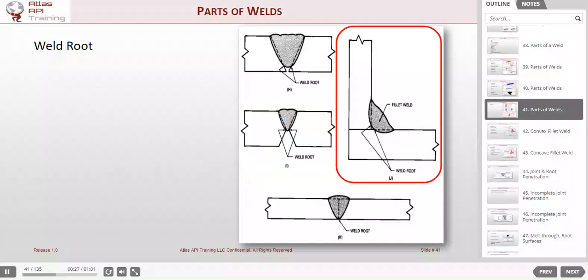And on J, on this fillet weld, we can see that the weld root doesn't even make it to the joint. You can see that little white space behind there. This would be lack of fusion, because it has not fused the joint. It's on either side of the joint, but it hasn't actually tied into the joint.